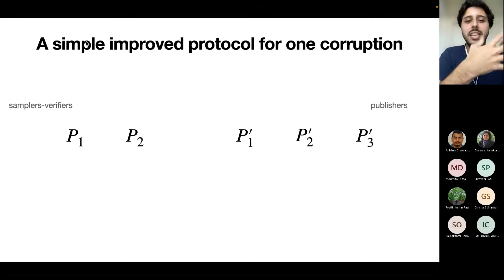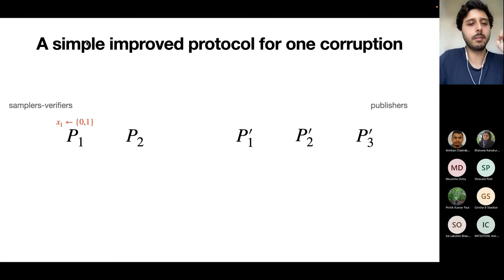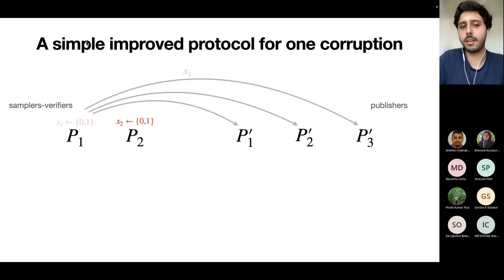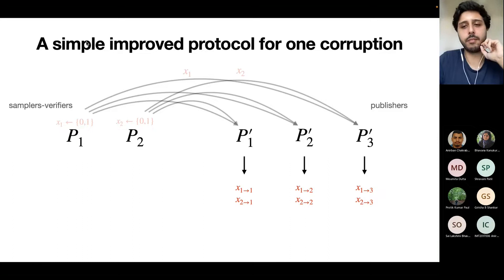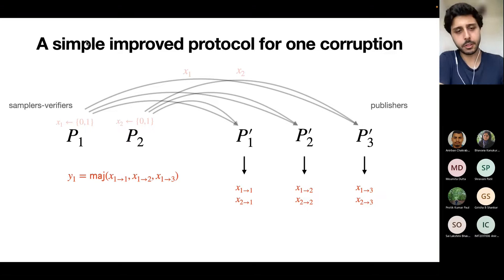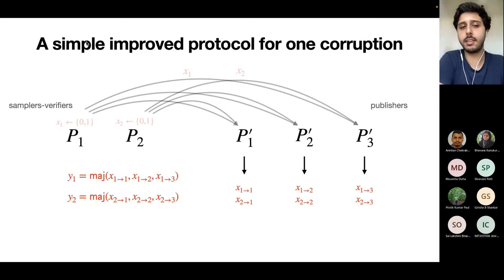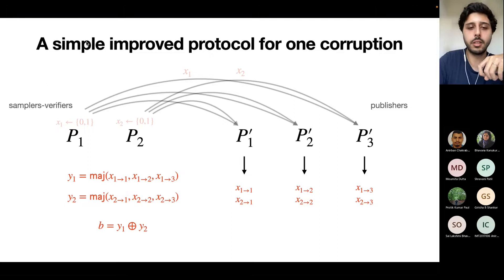For five roles and one corruption: first party samples a random bit, sends to all publishers. Second party samples another random bit, sends to all publishers. Publishers output whatever they received. You compute Y1 as the majority of values reportedly sent by P1, Y2 as the majority of values reportedly sent by P2, and the coin is the XOR of these two majorities.